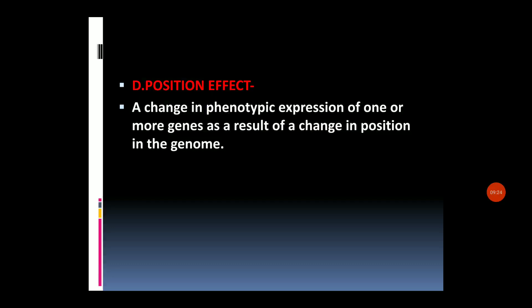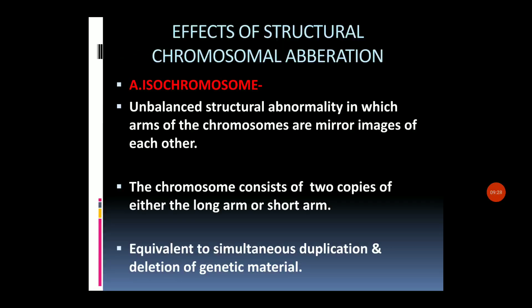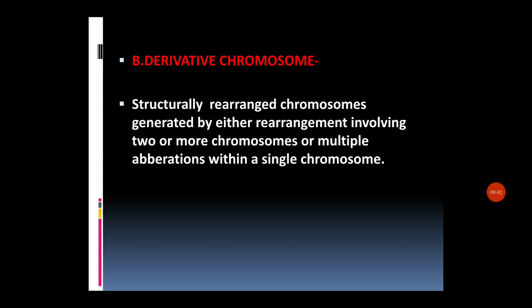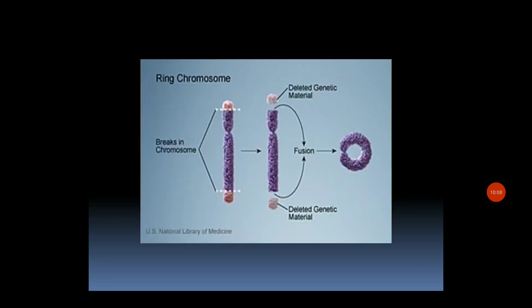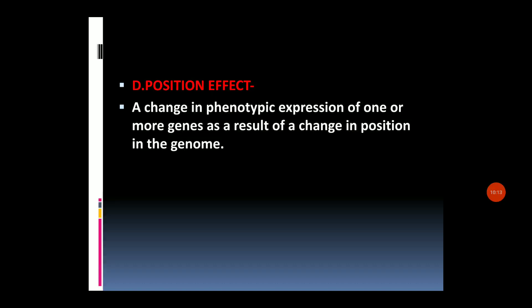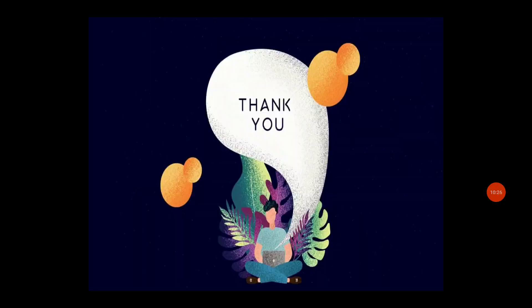To summarize the effects of structural chromosomal aberration: first, isochromosome; second, derivative chromosome; third, ring chromosome; and fourth, position effect. In the next class, we will discuss linkage and recombination. Thank you.